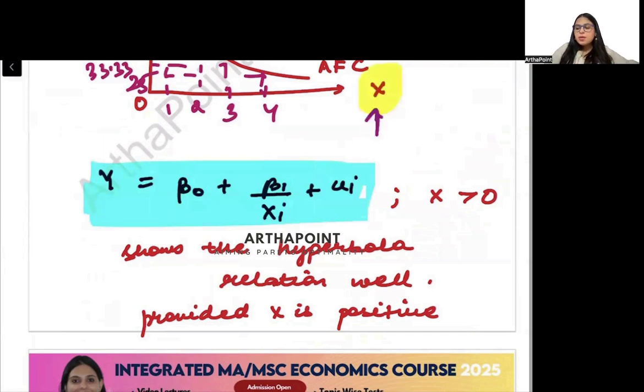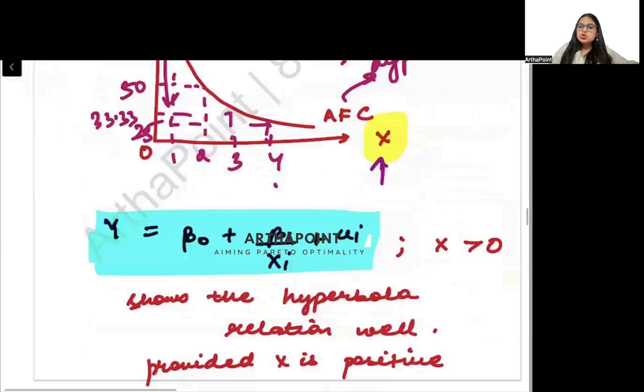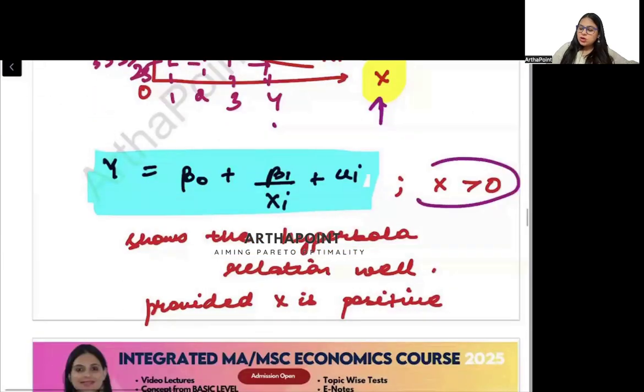Just make sure that this is defined as long as X is positive, because X is my output and my output is always non-negative, in particular it is positive, because at 0 units average fixed cost cannot be defined. So I will get my equation only as long as X is greater than 0.